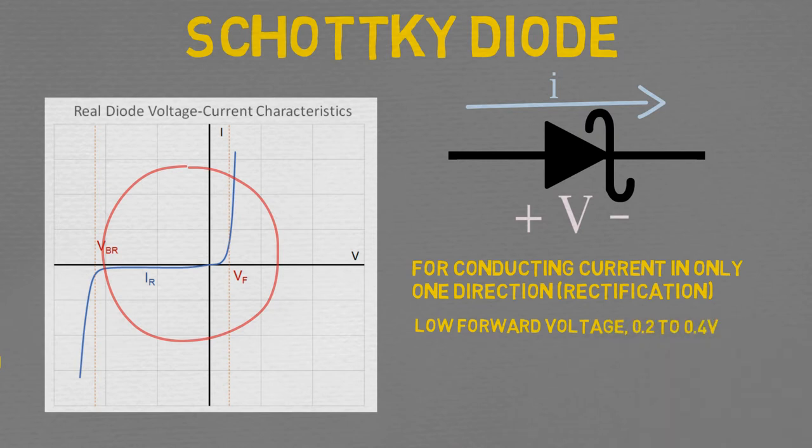This has the advantage of making them low power, especially in high frequency switching applications. The disadvantage of Schottky diodes is that they conduct a relatively high reverse current, typically in the low milliamp range.